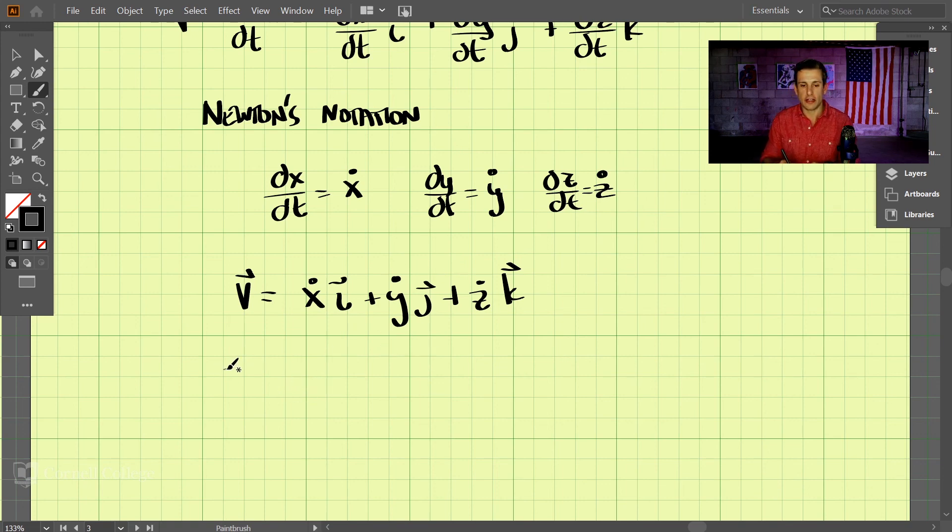And moving on to the acceleration now, we can write the acceleration as the second derivative of x with respect to time. So we would just write that x double dot i plus y double dot j plus z double dot k. We would take the derivative of our velocity vector again to get the acceleration.